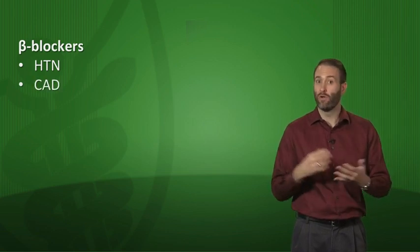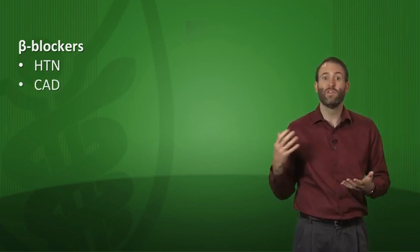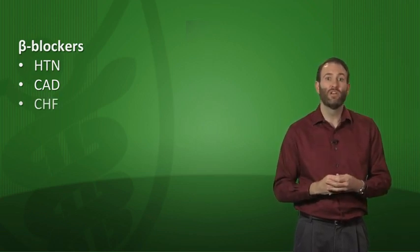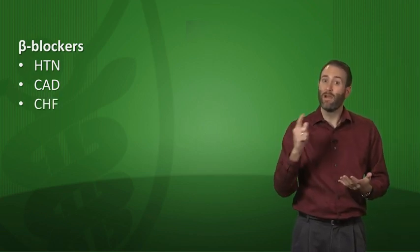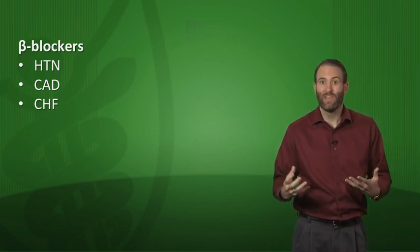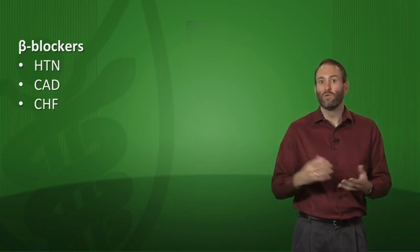Beta blockers are used quite often to treat many different things. Primarily hypertension is probably the biggest one. By blocking beta-1 receptors, you slow the heart, decrease contractility, and decrease the overall work of the heart, which is highly favorable for patients with coronary artery disease. So you'll see these drugs used a lot with patients with angina and patients who have had a heart attack.